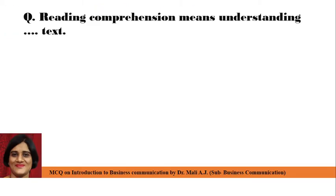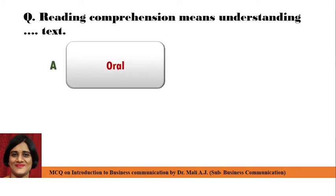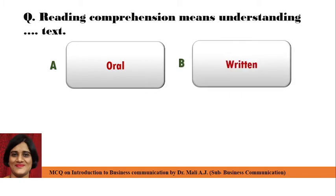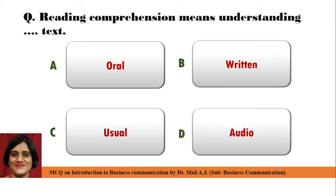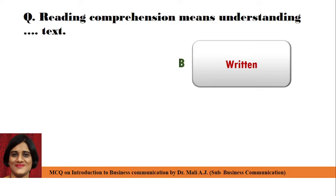Question: Reading Comprehension Means Understanding Dash Text. Point A: Forum. Point B: Return. Point C: U2. And Point D: Audio. Correct answer is: Written.